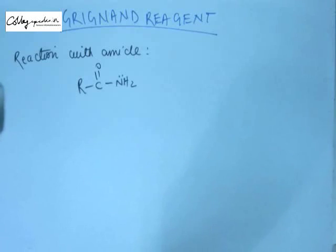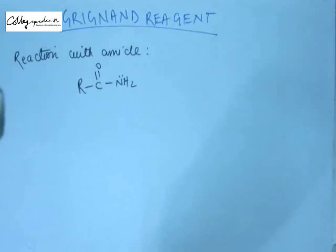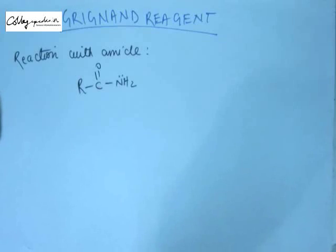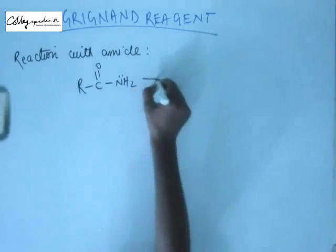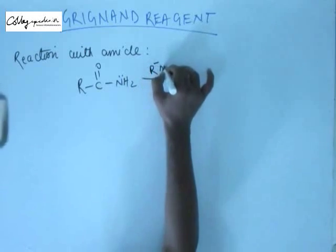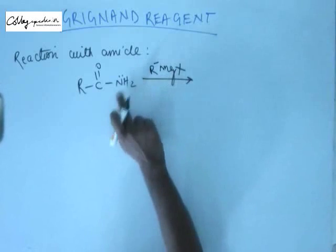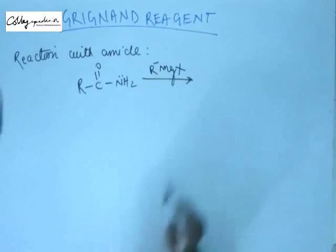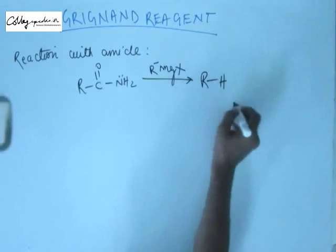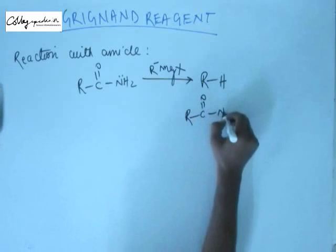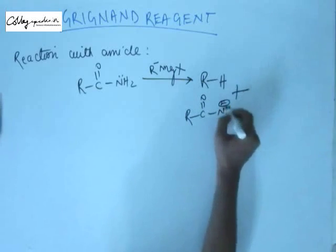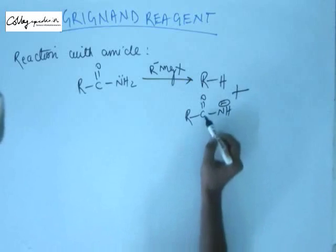When we look at amide, we find that a hydrogen is attached to nitrogen. That hydrogen is an active hydrogen because it is attached to an electronegative atom. So there is a possibility of an acid-base reaction. When Grignard reagent reacts with amide, the reaction that takes place is an acid-base reaction. The R minus of Grignard reagent abstracts this hydrogen from the amide, forming an R-H bond, resulting in formation of an alkane. A negative charge develops on the amide, stabilized by resonance with the C=O.